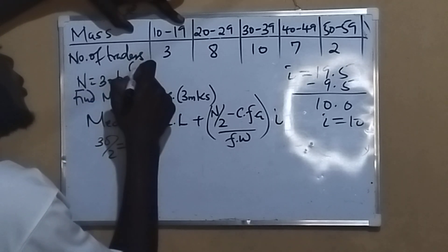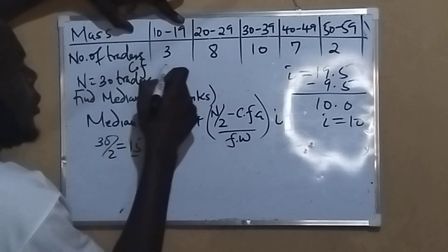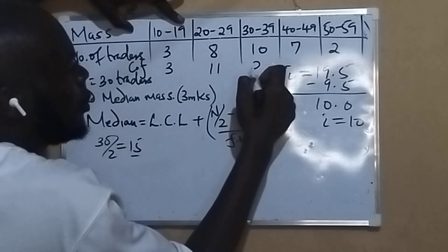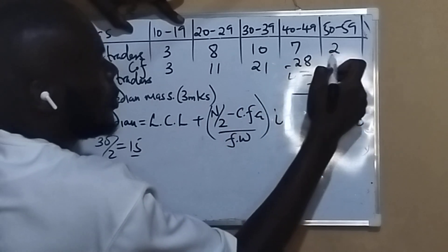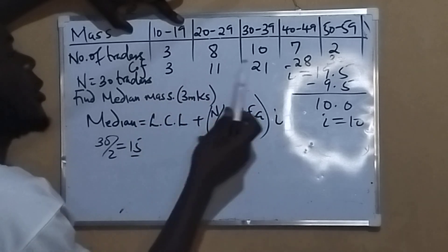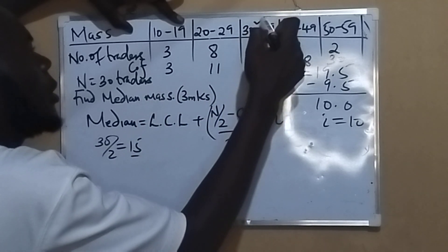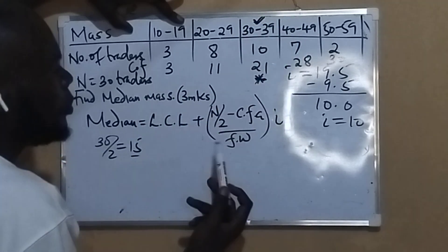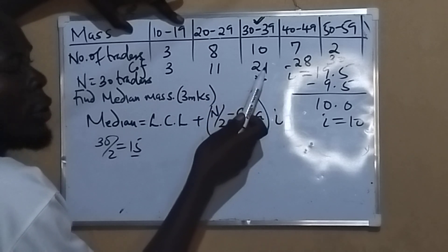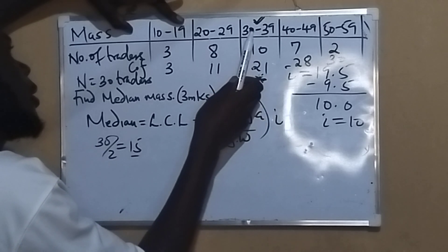If you have your cumulative frequencies, they are 3, 11, 21, 28, then 30. So 15 lies in this class, because from 11 to 21, those numbers are found here. So in this class, the median lies between cumulative frequencies 11 and 21.